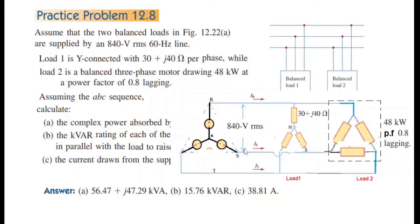Load one is Y-connected with 30 plus j40 ohms per phase impedance. Load two is a balanced three-phase load drawing 48 kilowatt at a power factor of 0.8 lagging.